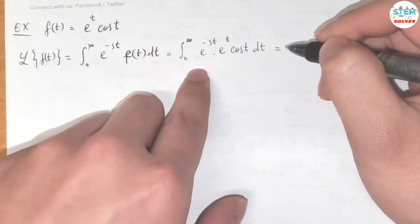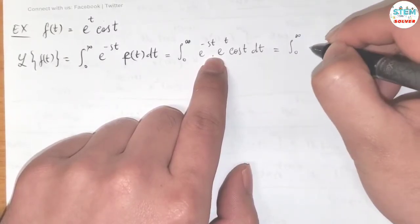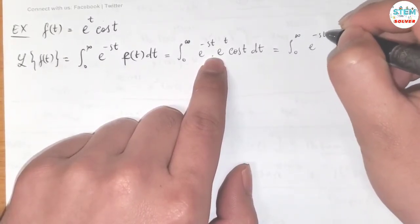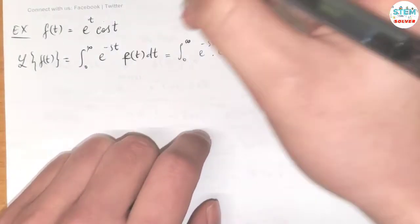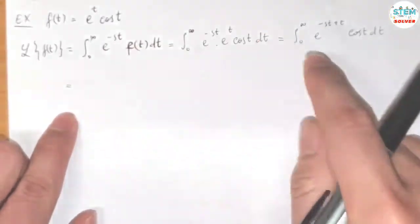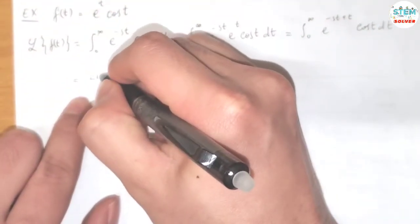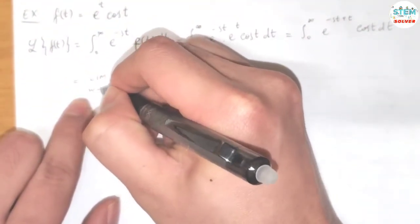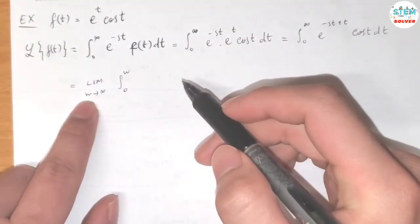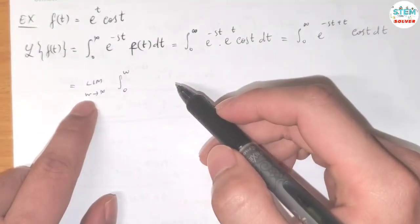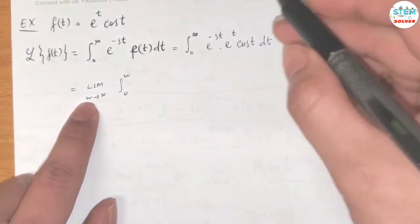Now I'm going to combine these two exponentials by adding the exponents together, which gives e^((-s+1)t) · cos(t) dt. We have an improper integral, so we have to take a limit as w goes to infinity of the integral from 0 to w. It doesn't matter what letter you use here, as long as it's different from t.